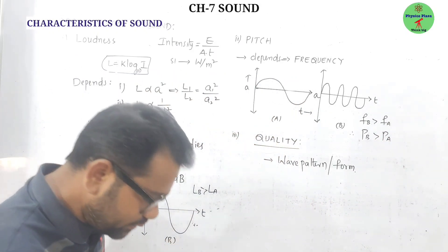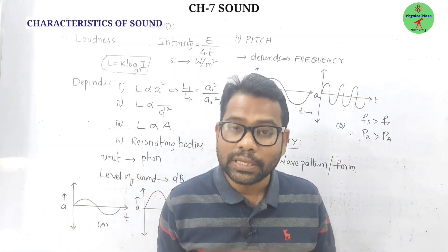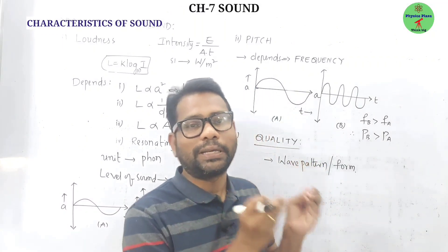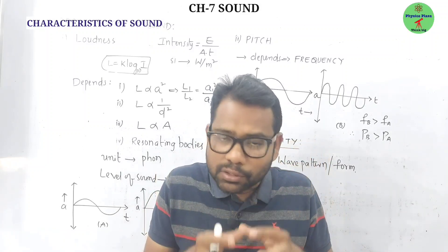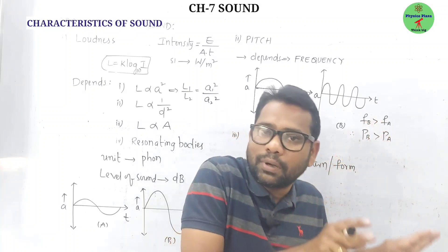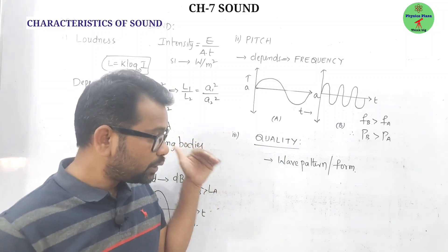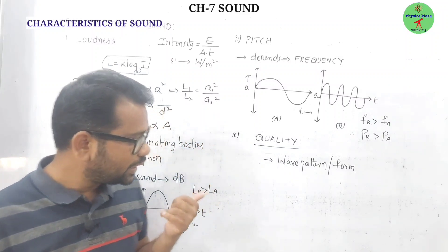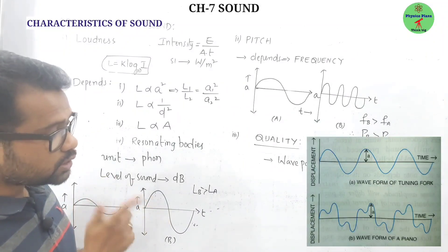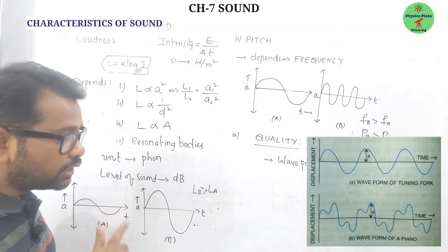Quality, or timbre, is very important. Two different musical instruments may produce sound with the same loudness and same pitch but cannot produce sound with the same quality. The characteristic of sound by which we can distinguish sounds from different instruments having the same loudness and pitch is called quality. Quality depends on wave pattern and waveform — for example, a tuning fork and a piano have the same loudness and pitch but different wave patterns, so their quality differs.